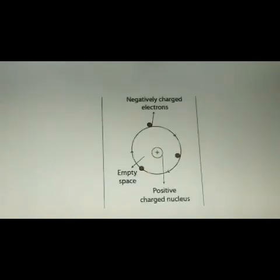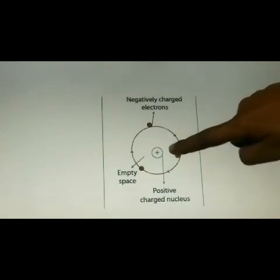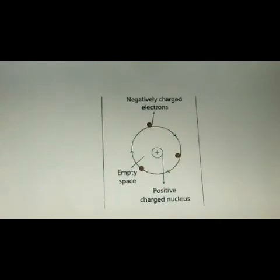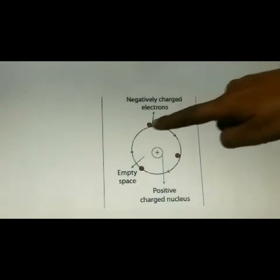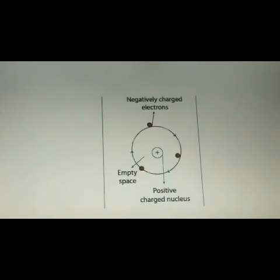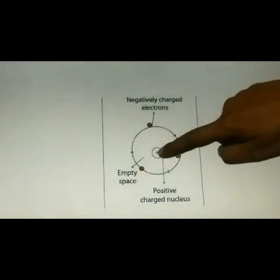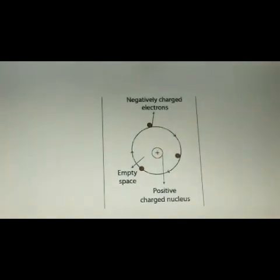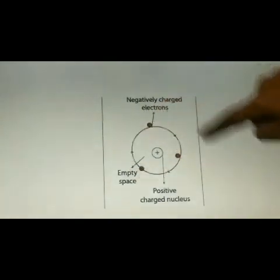Now you can see this picture, where inside the picture you can see a small circle which represents the nucleus of an atom. Inside the nucleus, both protons and neutrons are present. Outside the nucleus is the orbit, and in the orbit all the electrons revolve around the nucleus. This is the structure of an atom — protons and neutrons in the nucleus, and electrons revolving around it.